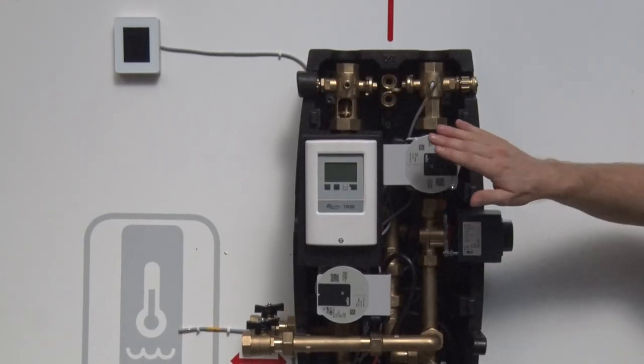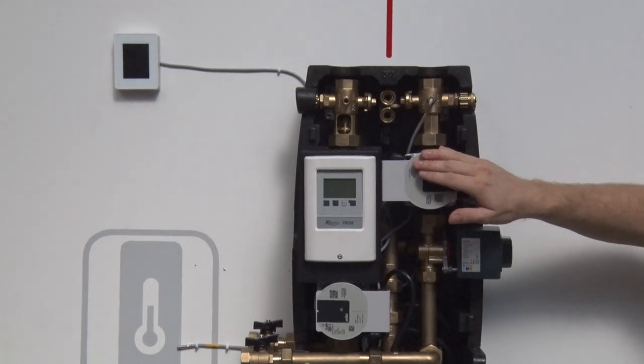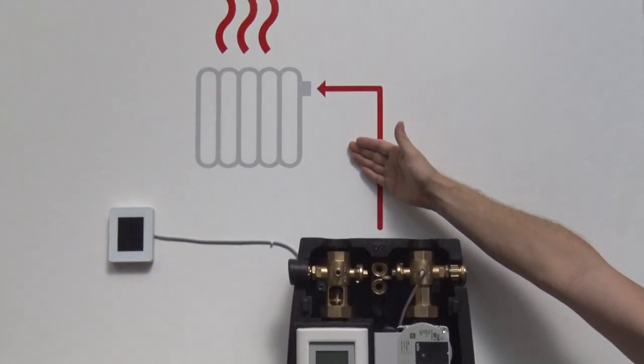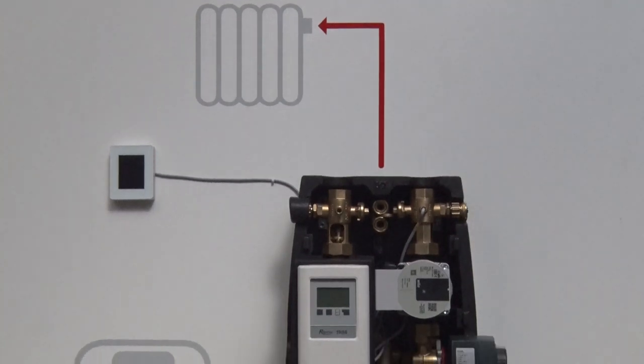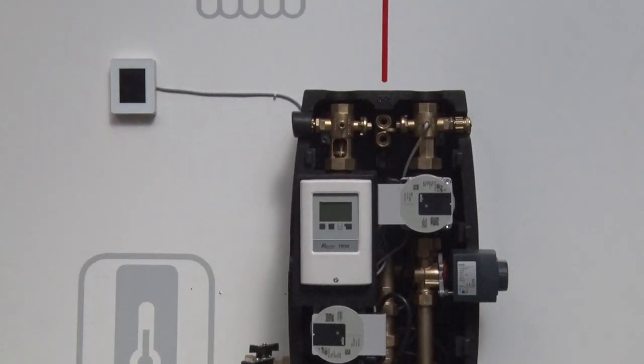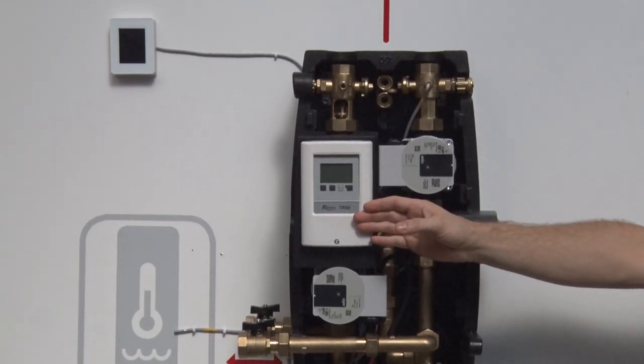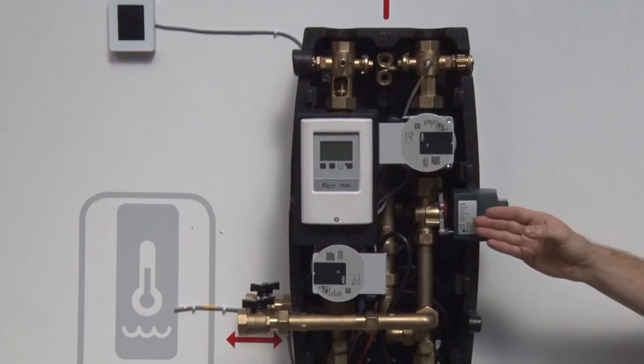The other circulation pump is intended for the heating circuit, where it mixes heating water to the weather compensating temperature set in the controller using a motorized three-way mixing valve.